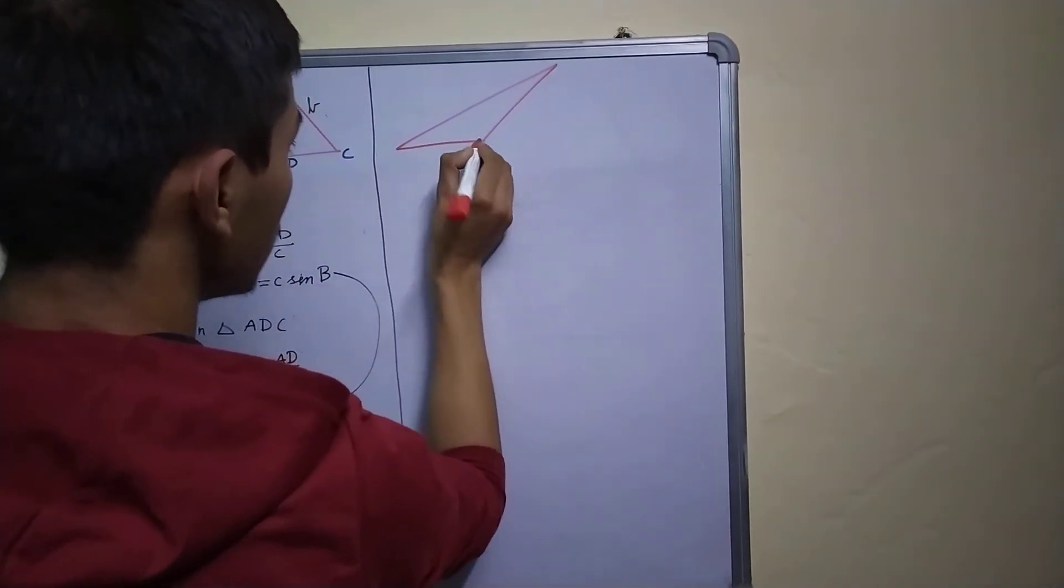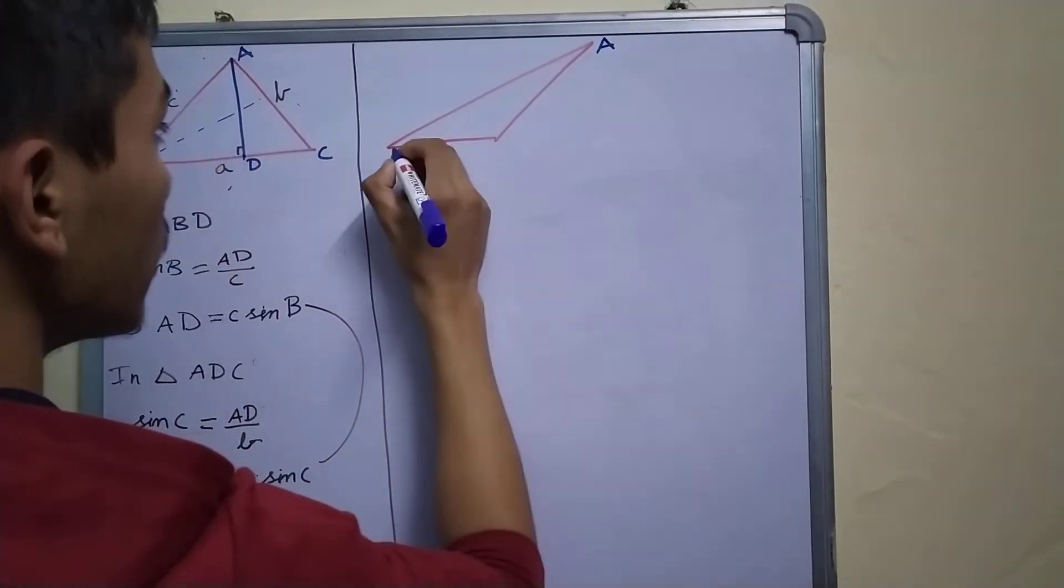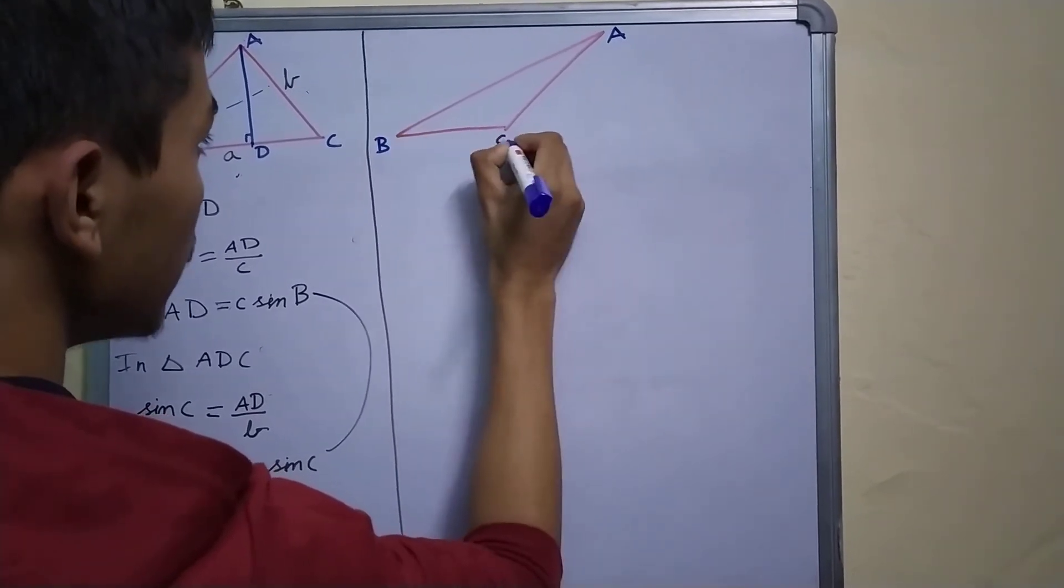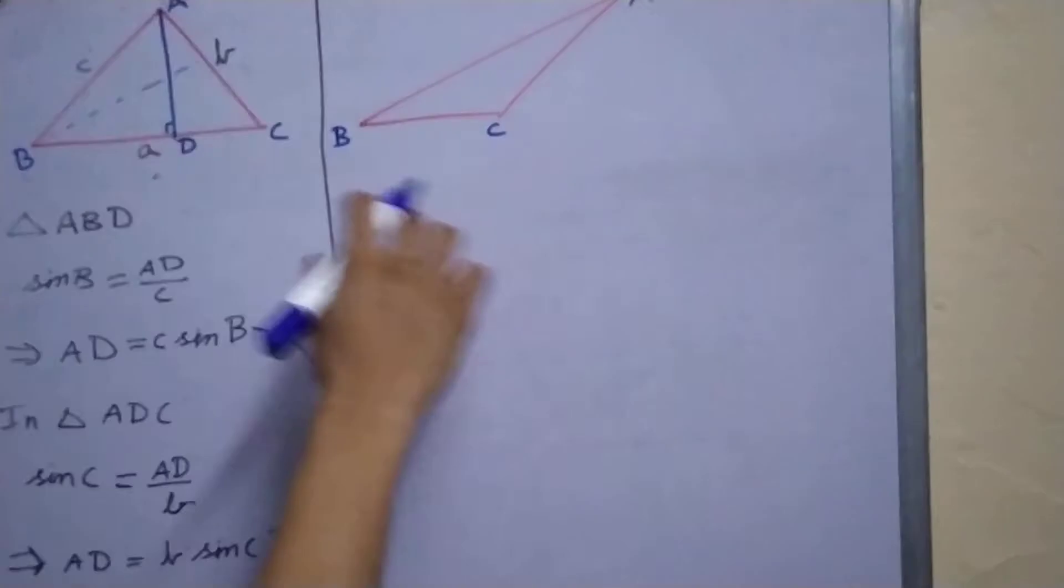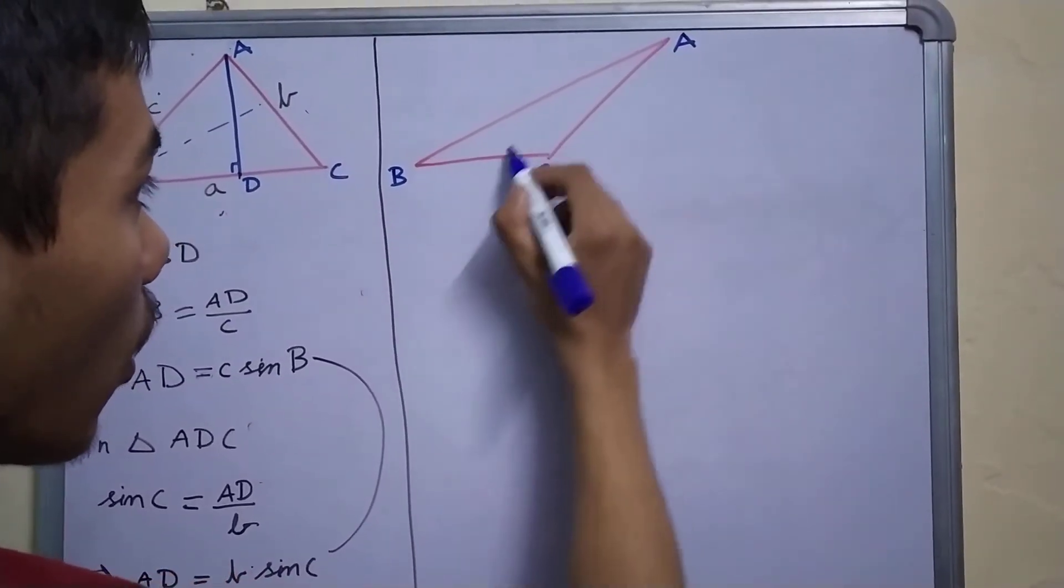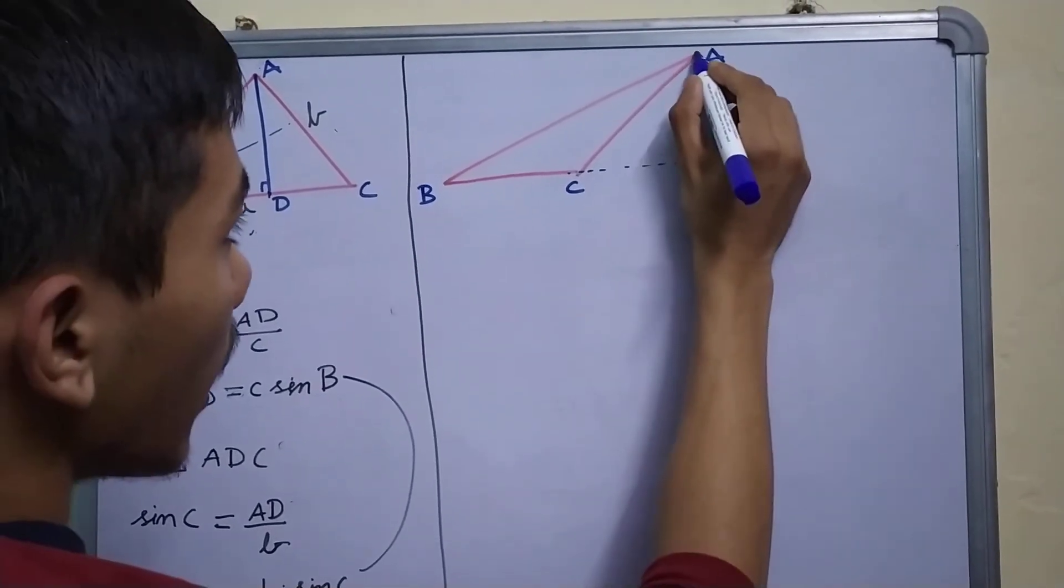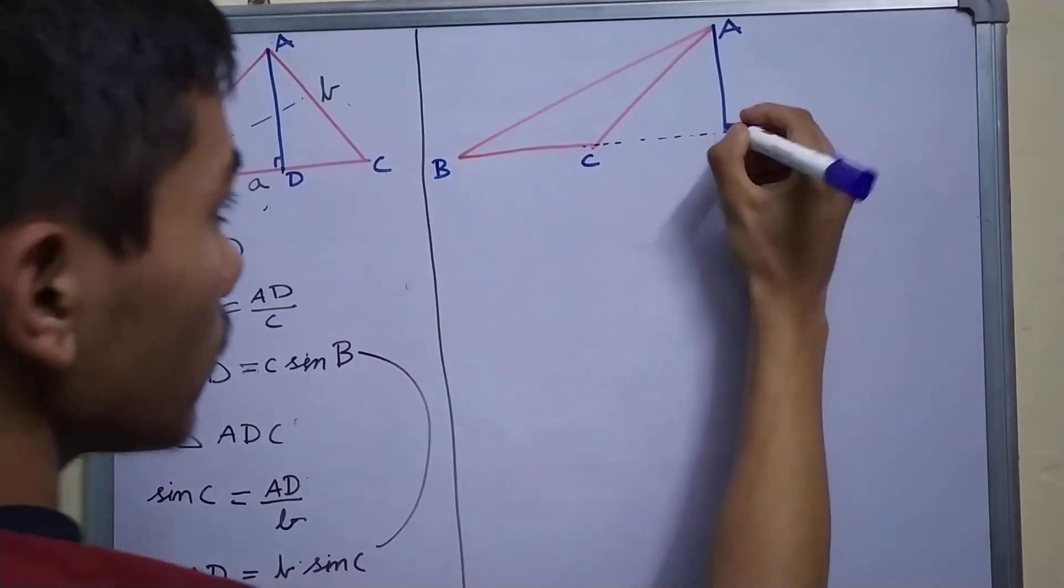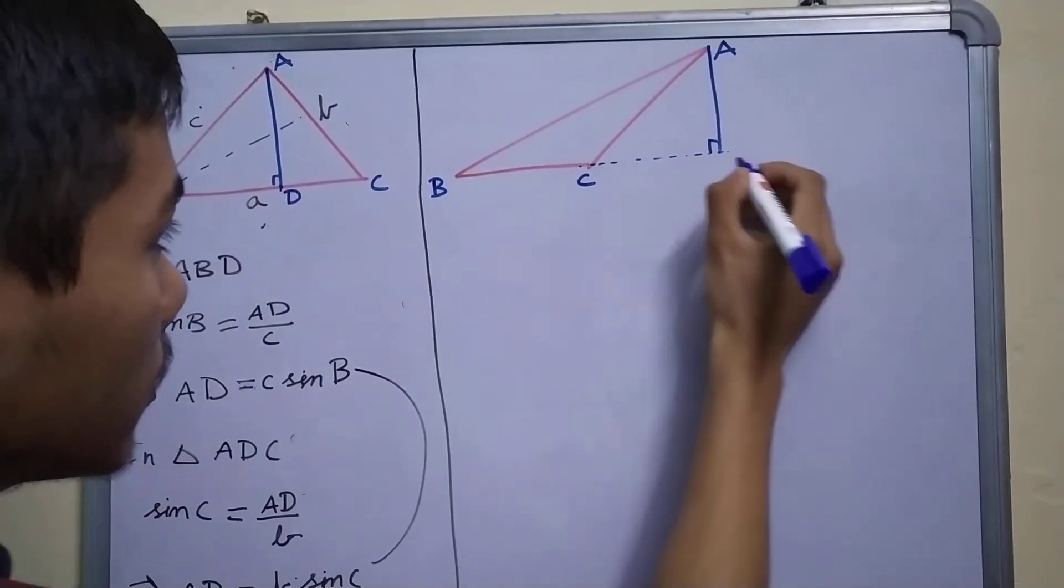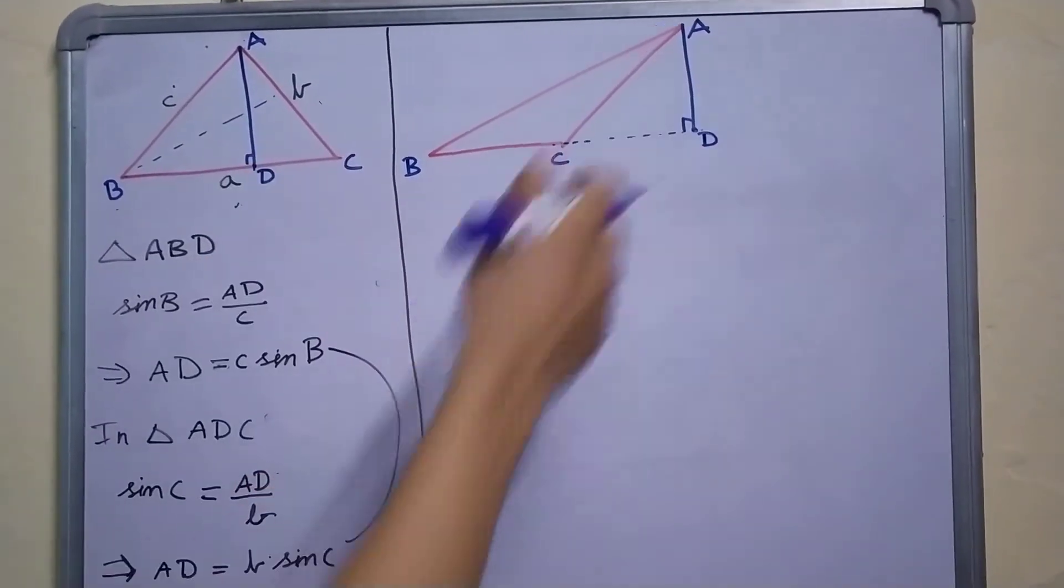Let me start by considering an obtuse angle triangle. Let me label it in a similar fashion: A, B, C. And the construction is the same. We make AD perpendicular to BC. Of course, it cannot lie on BC, but if we extend this, we will be able to make a line perpendicular to this.